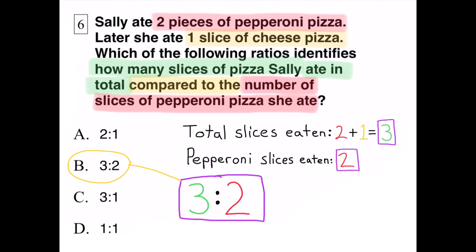Sally ate a total of three slices of pizza compared to just two slices of pepperoni pizza. The correct answer would be B, a ratio of three to two.